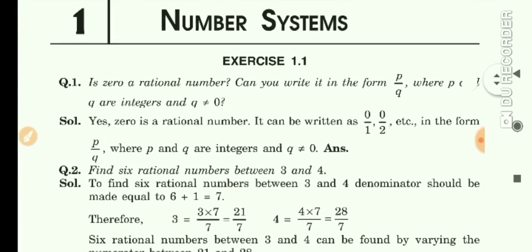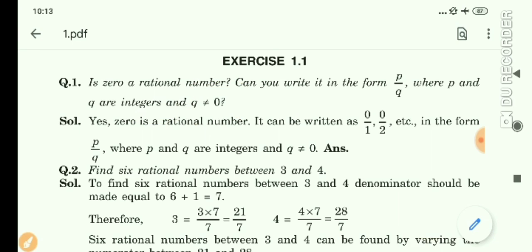Question number 1: Is 0 a rational number? Can you write it in the p upon q form, where p and q are integers and q is not equal to 0? We can take any value in q but q is not equal to 0 — we can take any number 1, 2, 3, 4, 5 as we wish, but we don't take 0. So our solution is: yes, 0 is a rational number.